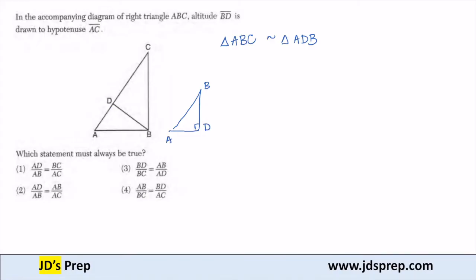So these two triangles are similar, and when they're similar triangles, we can draw a ratio of the sides. And that's what we're looking for here, to figure out which statement must always be true.